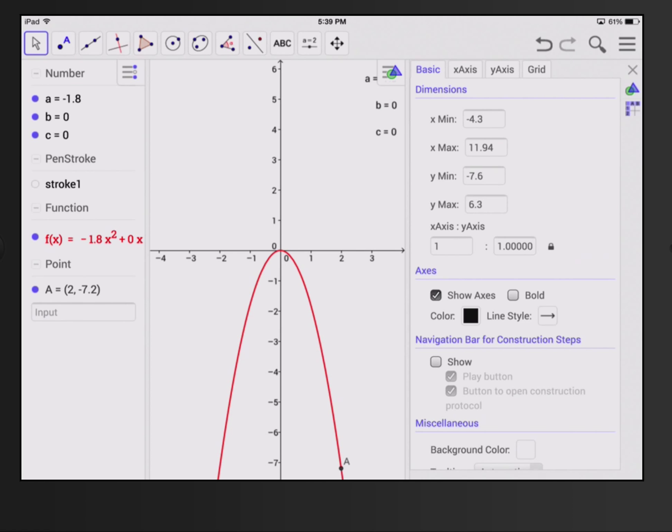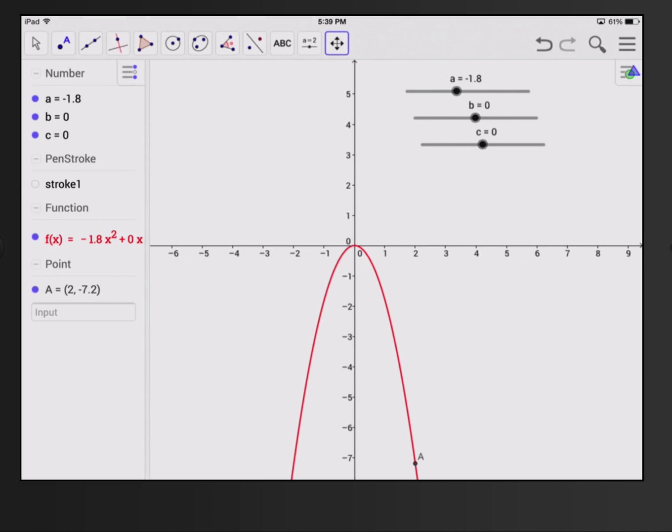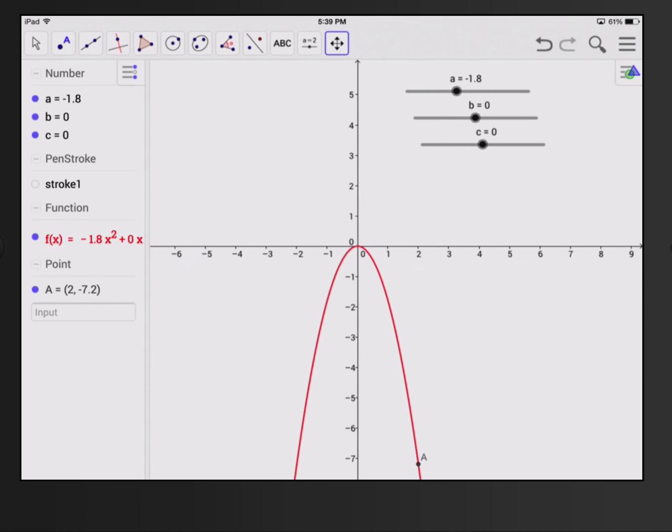And so what we're going to do is investigate first what happens as we move A. All right, so I'm going to center my grid a little bit. And now I'm letting b equal 0, c equal 0, and I'm going back to my arrow key.